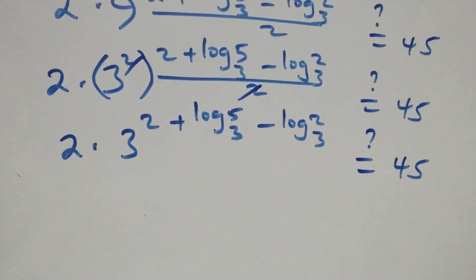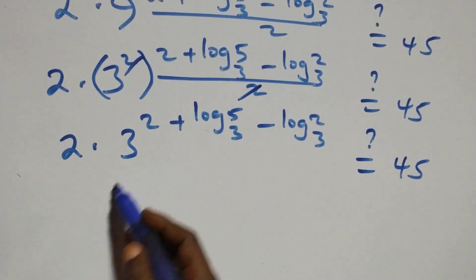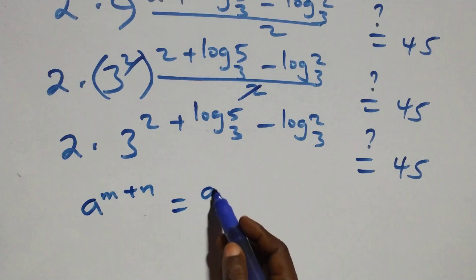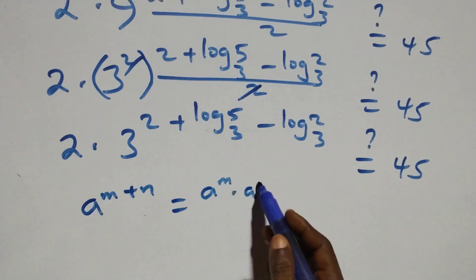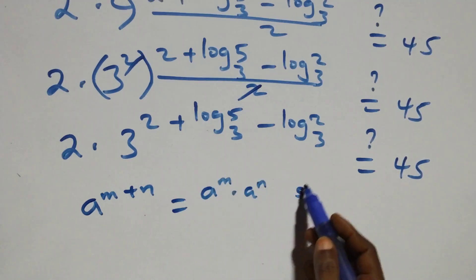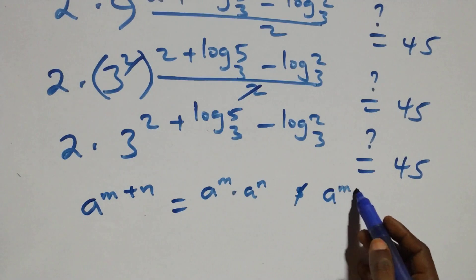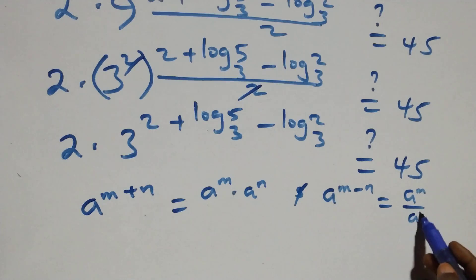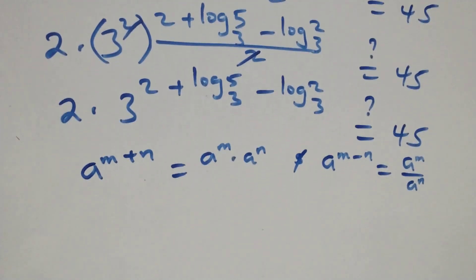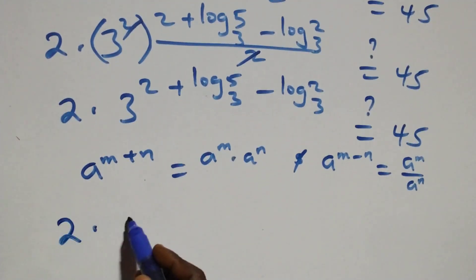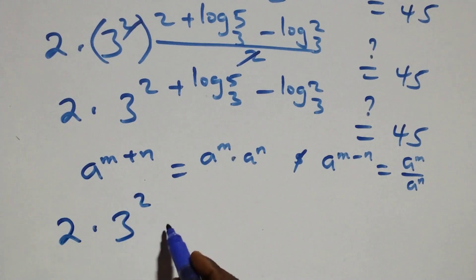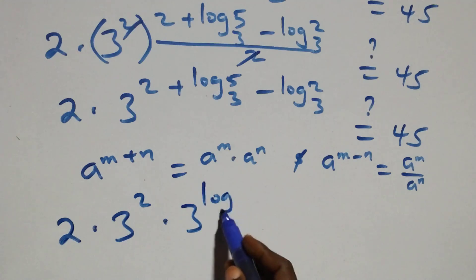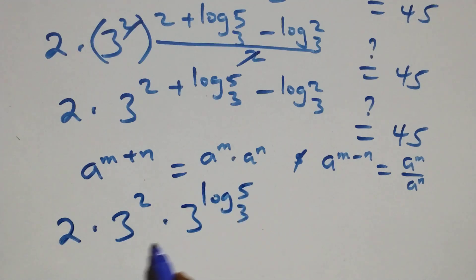Then here, we apply the index law. When we have a raised to power (n plus n), this is the same thing as a^n times a^n. And a raised to power (n minus n) is the same thing as a^n over a^n. That is, what we have here becomes 2 times 3 squared times 3 raised to power log₃5.